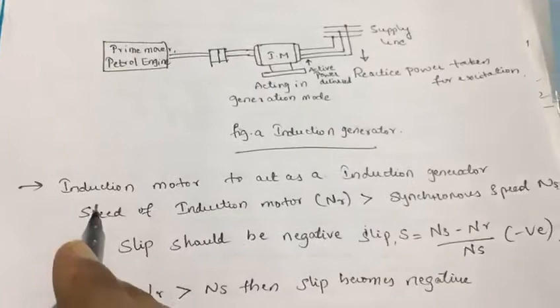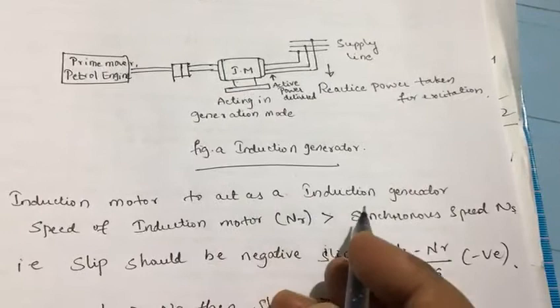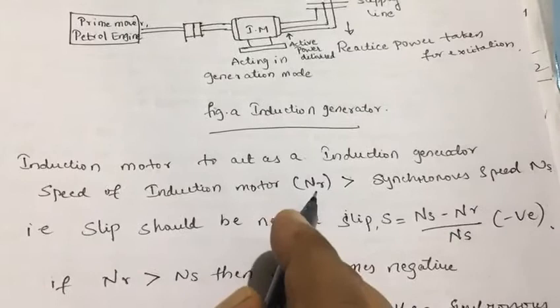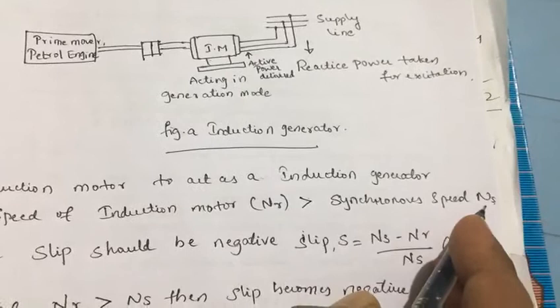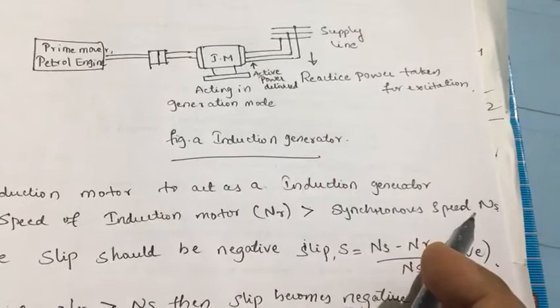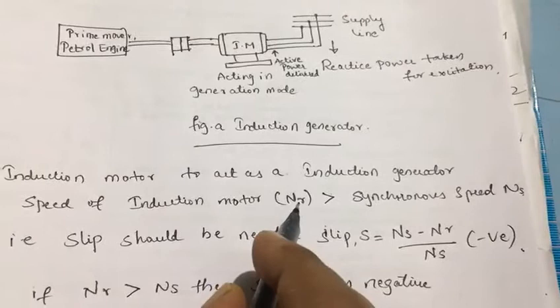An induction motor can be made to act as an induction generator, provided the speed of the rotor of the induction motor, nr, is greater than synchronous speed ns. ns is the speed of the rotating magnetic field. In normal motor operation, the synchronous speed is always greater than the rotor speed nr.